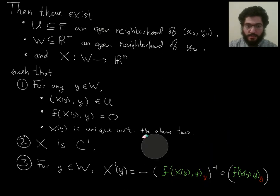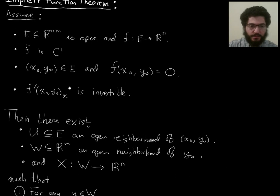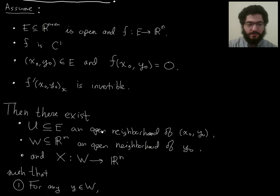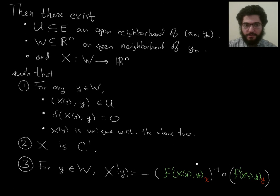And, our assumption, our assumption, which disappeared, our assumption here, is that f' at (x_0, y_0) subscript x. So, like, maybe you can call that the first component of this matrix, the left half of this matrix, if you think of it as a matrix, is invertible. That is part of our assumption.